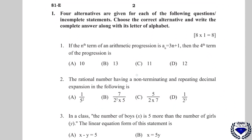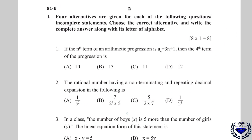Looking at question number 1, these are the objective questions — 8 questions of 1 mark each. While writing the answer in your answer sheets, you should write the alphabet along with the correct answer: choose the correct alternative and write the complete answer along with its letter of alphabet. If you miss either one, you will get 0 marks.